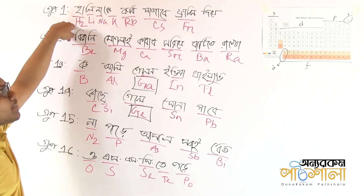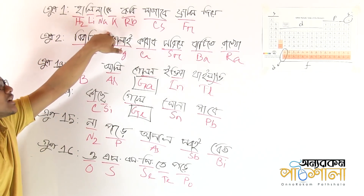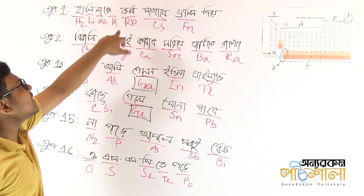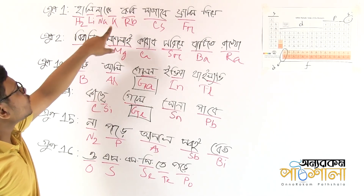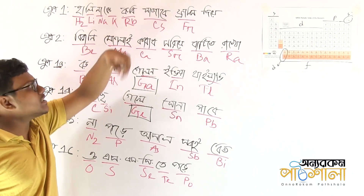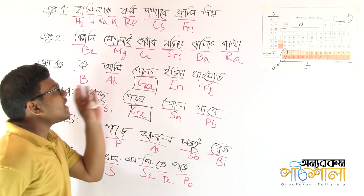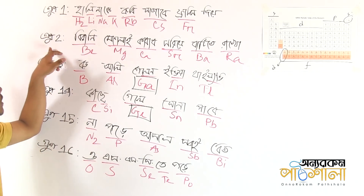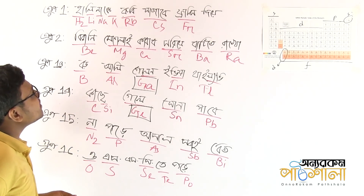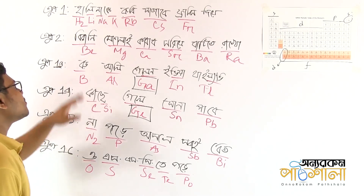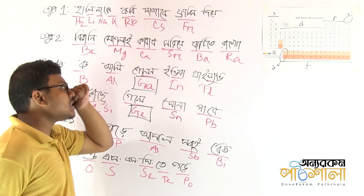Group 1 elements are: hydrogen, lithium, sodium, potassium, rubidium (Rb), caesium (Cs), and francium. Group 1 elements are known as the alkali metals.